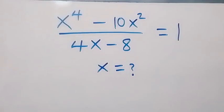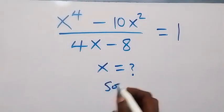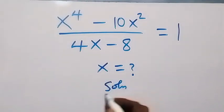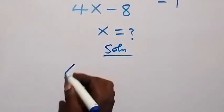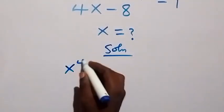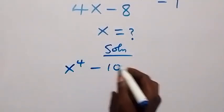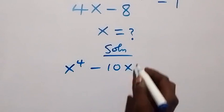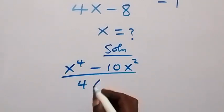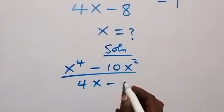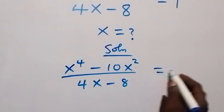Hello, you are welcome. How to solve for x in this algebra equation. What is given is x raised to power 4 minus 10x squared, over 4x minus 8, equals to 1.